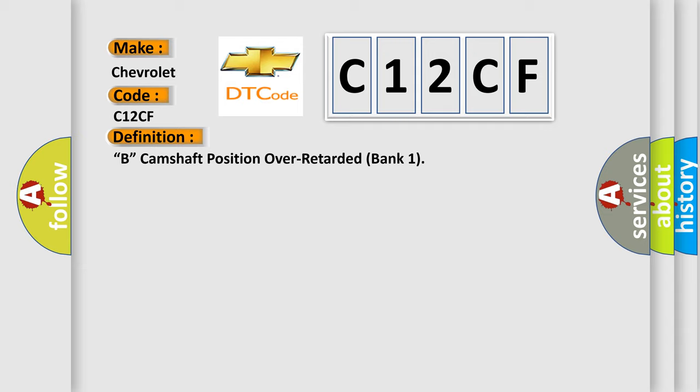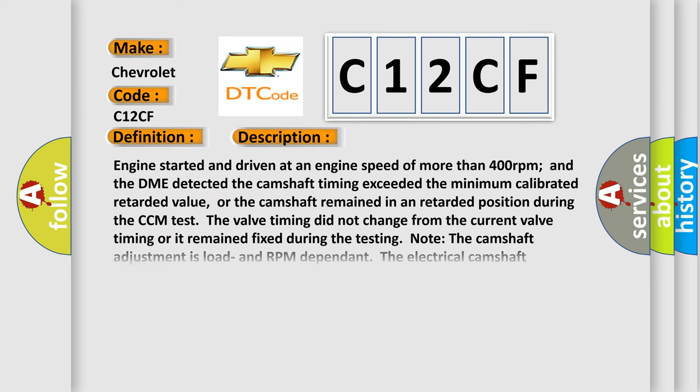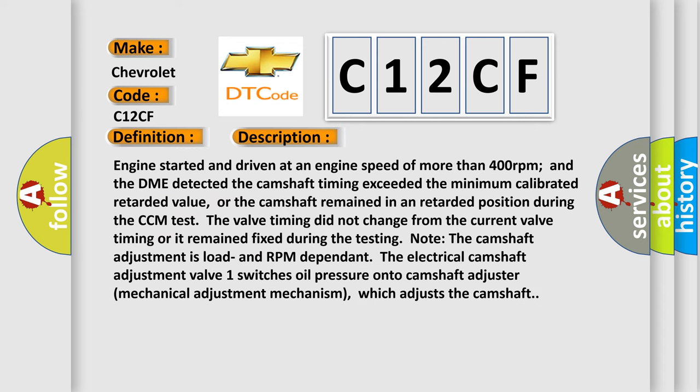Here is a short description of this DTC code. Engine started and driven at an engine speed of more than 400 RPM, and the DME detected the camshaft timing exceeded the minimum calibrated retarded value, or the camshaft remained in a retarded position during the CCM test. The valve timing did not change or remained fixed during testing. Note: camshaft adjustment is load and RPM dependent. The electrical camshaft adjustment valve 1 switches oil pressure onto the camshaft adjuster mechanical adjustment mechanism, which adjusts the camshaft.